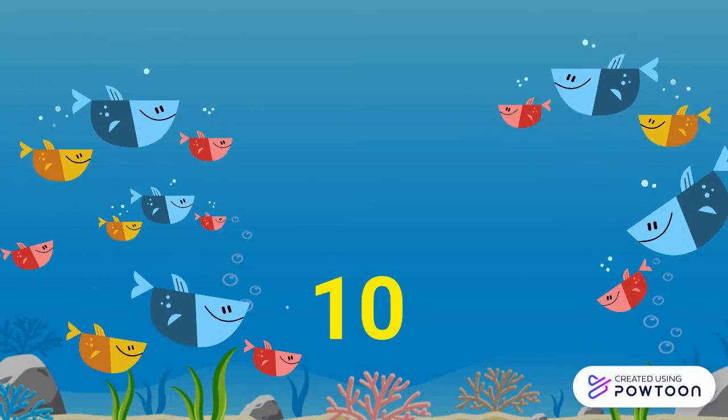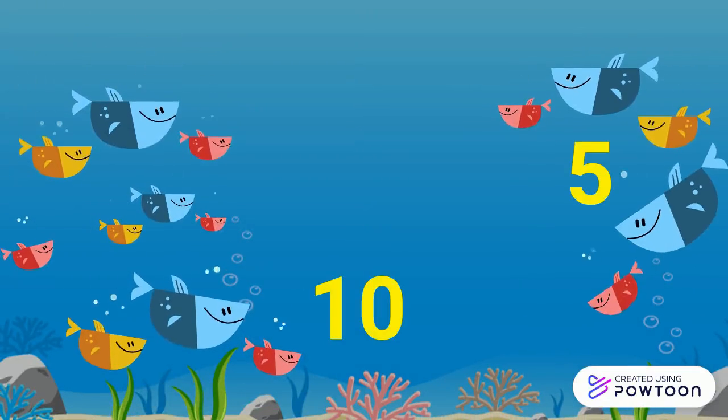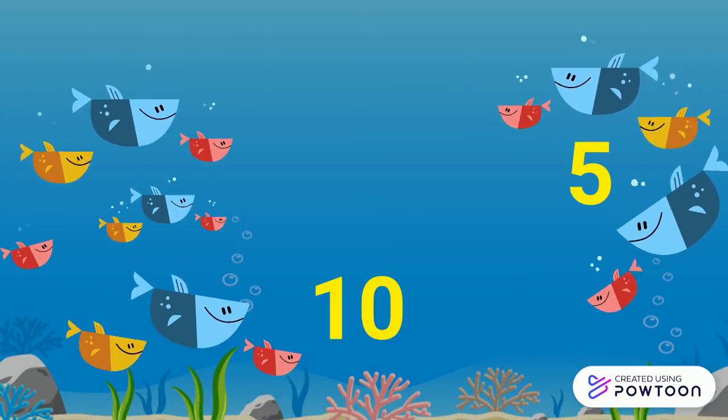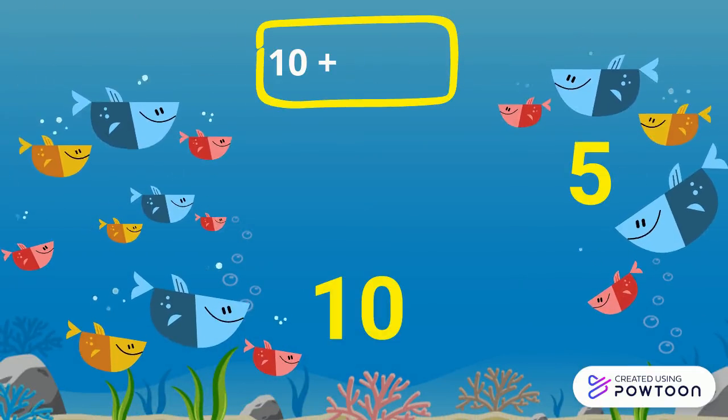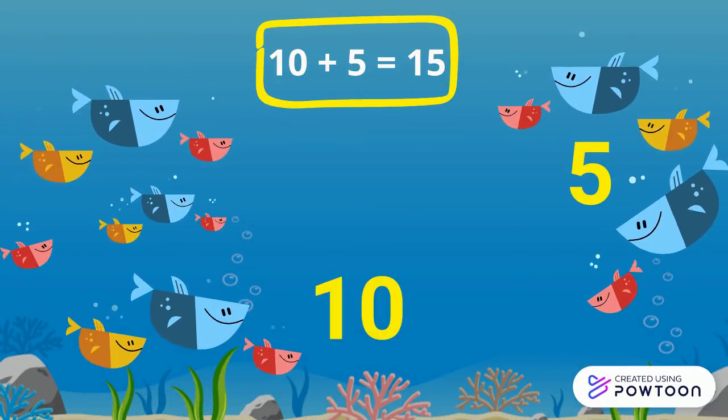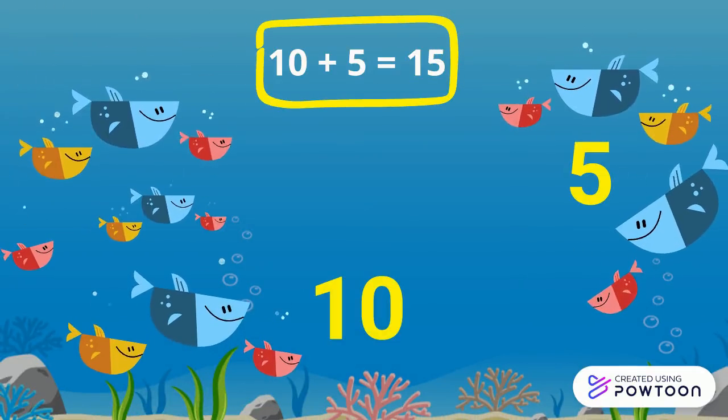10 fish are swimming in the sea. 5 other fish came. So 10 plus 5 equals 15.